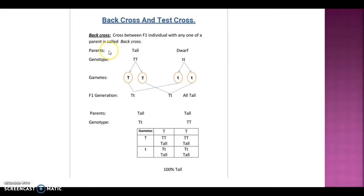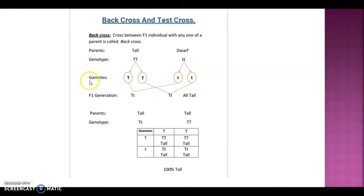For example, a cross between a tall individual and a dwarf individual. The genotype of tall is capital T capital T, and the genotype of dwarf is small t small t. Regarding the gametes, the tall individual produces capital T and capital T, and the dwarf individual produces small t and small t.